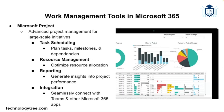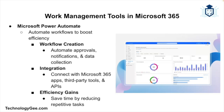Next, we have Microsoft Project, a comprehensive tool for managing large-scale projects. It offers task scheduling to plan tasks, set milestones and dependencies, resource management to allocate resources efficiently, reporting to generate detailed reports on project progress and performance, and integration with Teams and other Microsoft 365 apps. Then we have Microsoft Power Automate, which allows businesses to automate workflows and repetitive tasks. It features workflow creation for approvals, notifications, and data collection, integration with Microsoft 365 apps, third-party tools, and APIs, and efficiency gains through process automation.